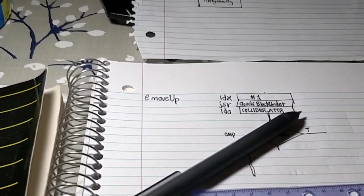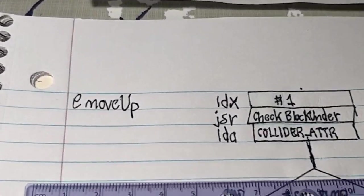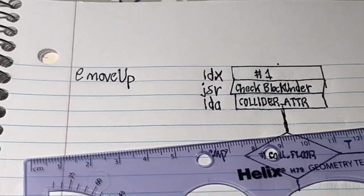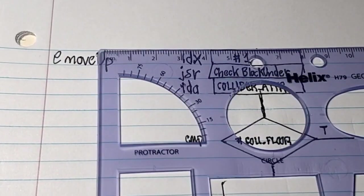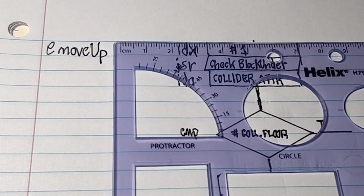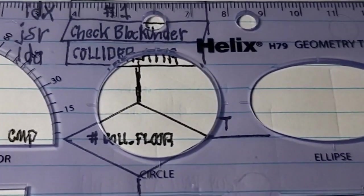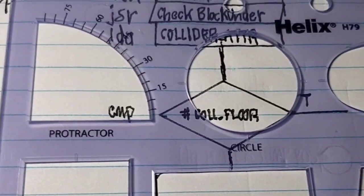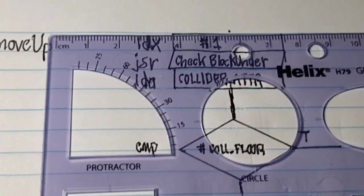An excellent way to reduce a lot of time with debugging and error checking is to create some flow charts when the logical solutions are not that obvious and are taking a lot of time to work out. I personally enjoy using my helix geometry template to create shapes and work out great alignment, as seen in this example.